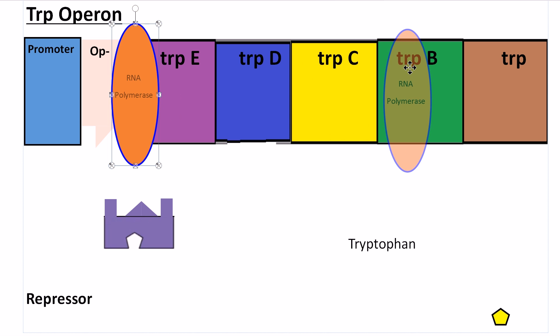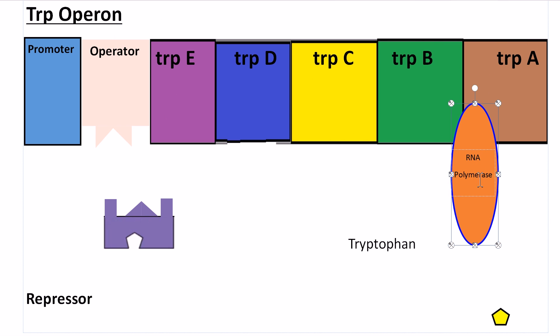trp C, trp B, and trp A, which are then going to create more tryptophan.